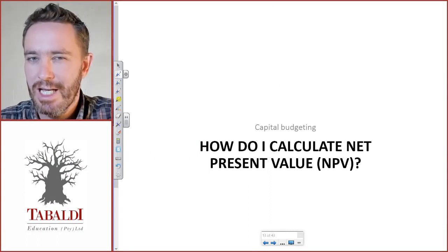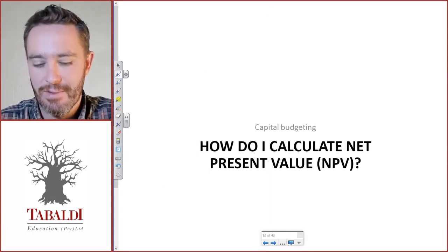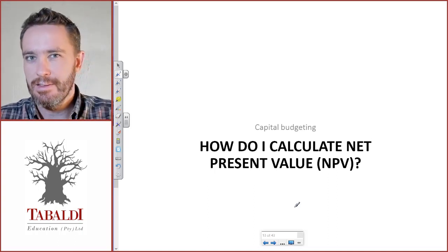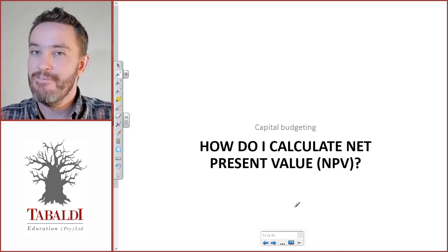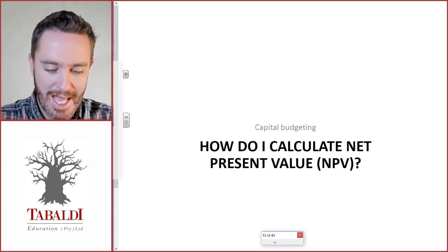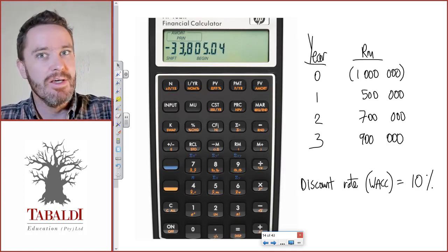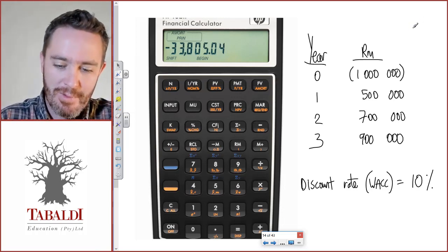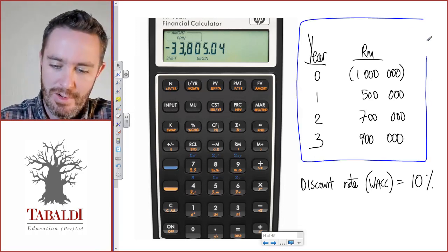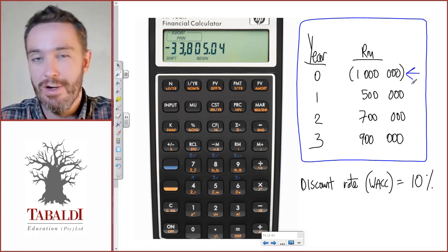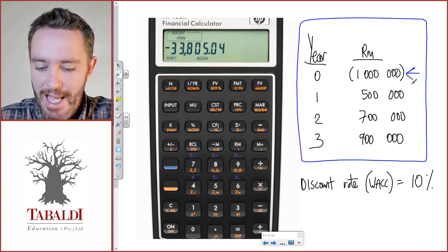Let's look at how to calculate the net present value. There are two possible scenarios: it might be a very simple calculation where they actually give you the net cash flows for every year of the project. This project will run for three years, with an initial investment in year zero of one million.